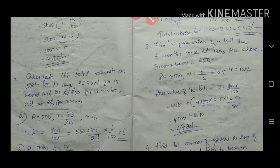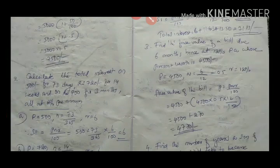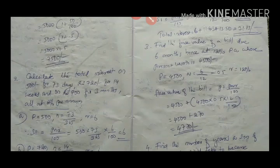If the period is given in forms other than years — such as days, weeks, and months — there is a slight variation in the formula. The value of n will change accordingly. For example, rupees 500 is taken for 73 days, so n will be 73 divided by the total days in a year. Since there are 365 days in a year, n will be 73 divided by 365.